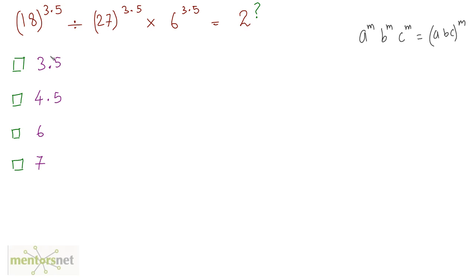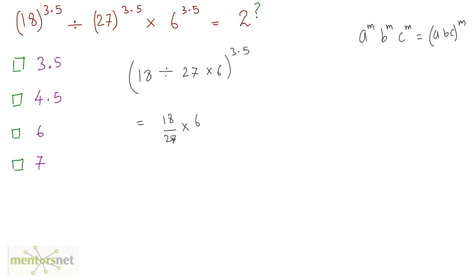So I can write this as 18 divided by 27 times 6, raised to 3.5. This equals 18 by 27 times 6. Now, 3 sixes are 18, 3 nines are 27, and 3 twos are 6 and 3 threes are 9, so 3 ones are 3 and 3 twos are 6. This simplifies to 4 raised to 3.5.